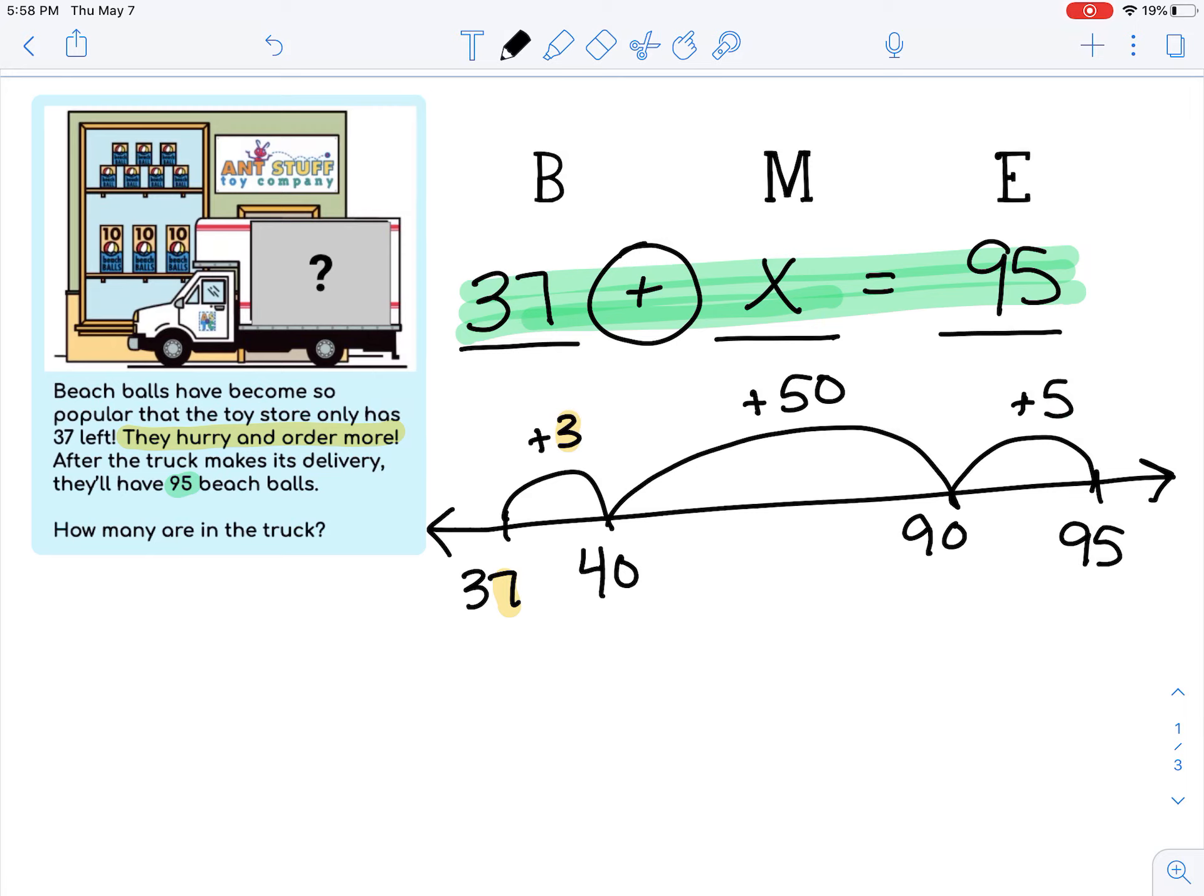And then I only have 5 more to go. And there we go. Now I just need to add together 3 plus 50 plus 5.